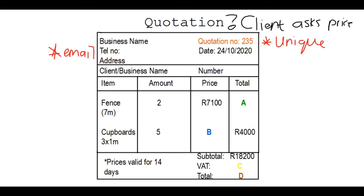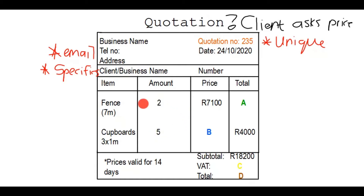You'll also see that there will be a client or business name, because you need to know who this quotation is going to — you might have given this person a specific discount. When you look at the items, this person wanted to know the price for fencing that is seven meters, and cupboards. He wanted two rolls of fence and five cupboards of that size.